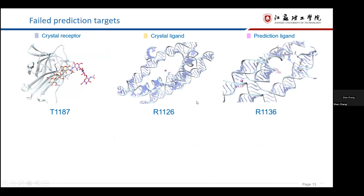There are three failed targets: T1187 and two RNA systems, R1126 and R1136.